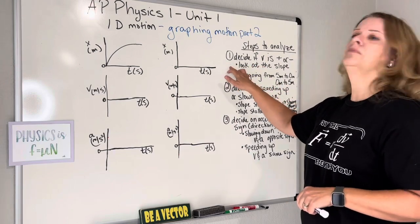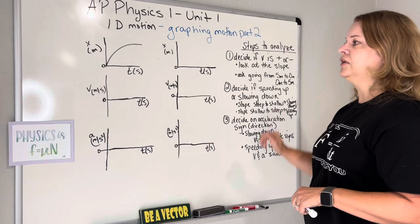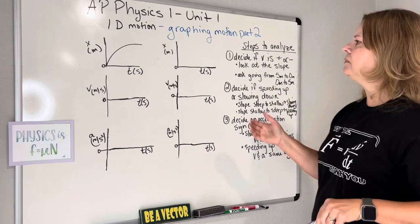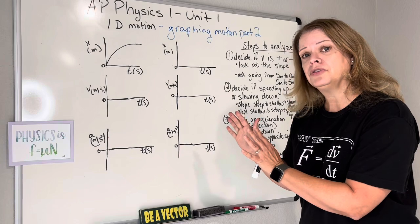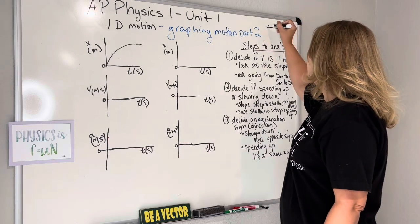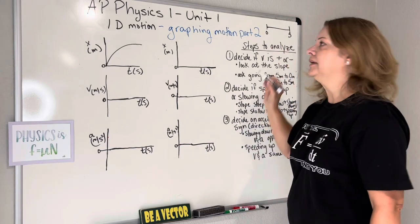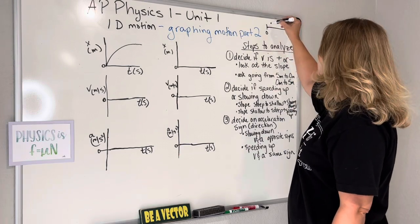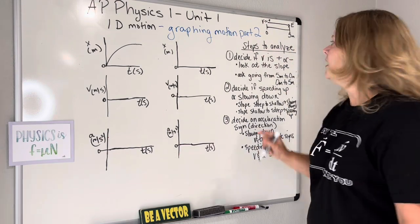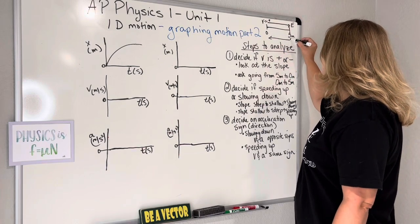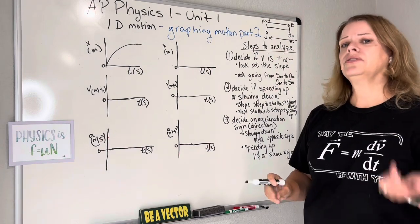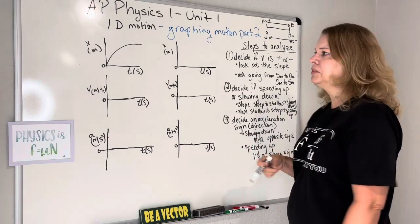The first thing you're going to decide is if velocity is positive or negative — you're going to look at that slope. If you can't tell from the slope because the curve is freaking you out, then ask yourself: am I going from 0 to 5 meters, or from 5 meters to 0? Here's a number line in meters. If I'm going 0 to 5 meters, I'm going east and my velocity is positive. If I'm going from 5 meters to 0, I'm going west and my velocity is negative — because west and south are negative, east and north are positive. Signs are just directions.